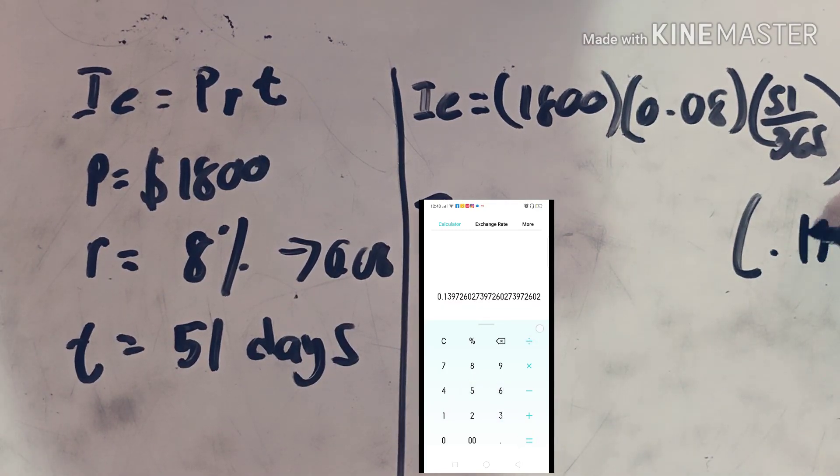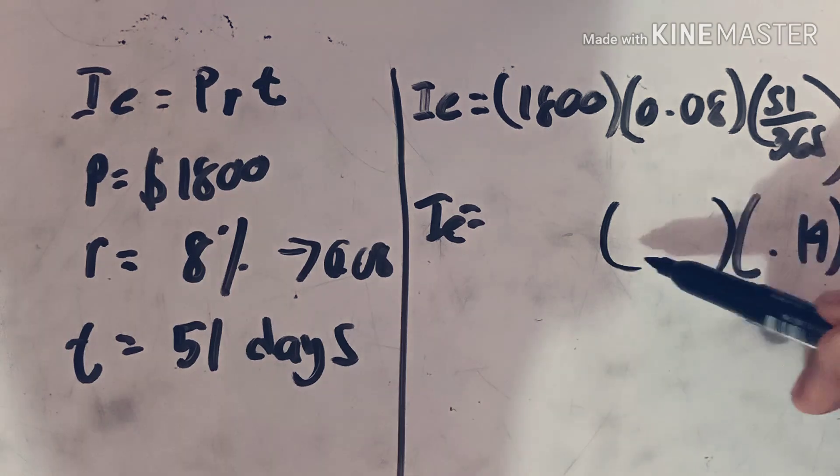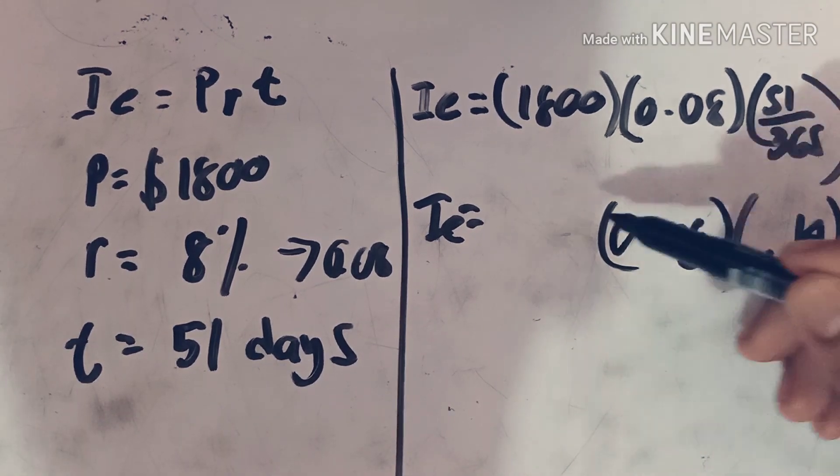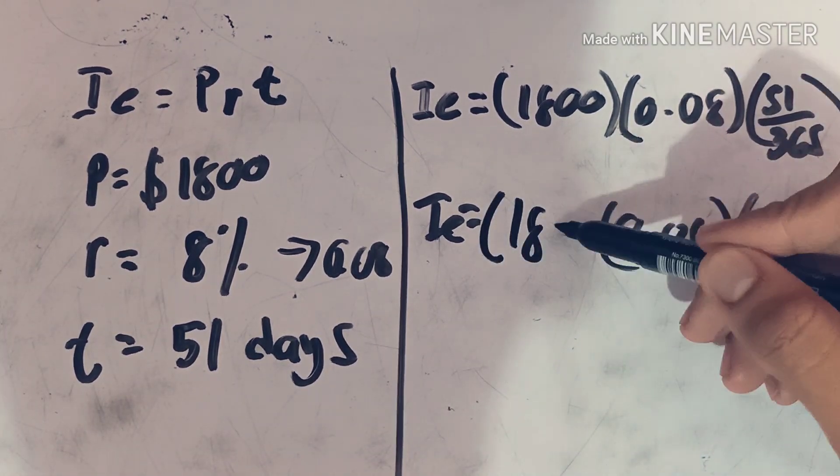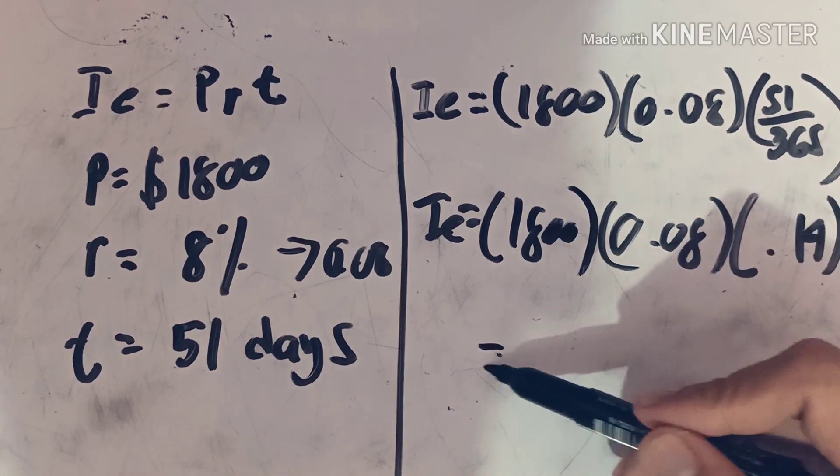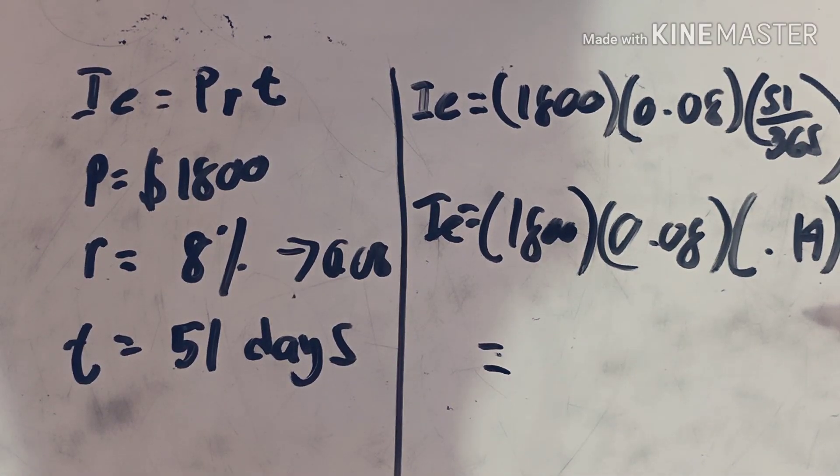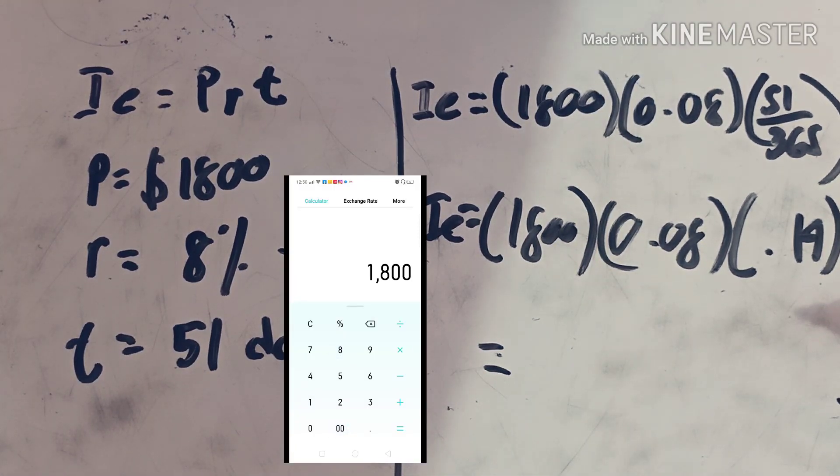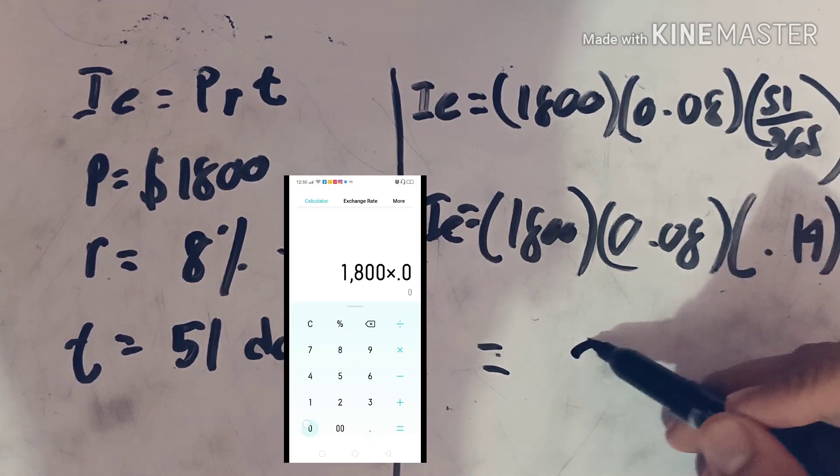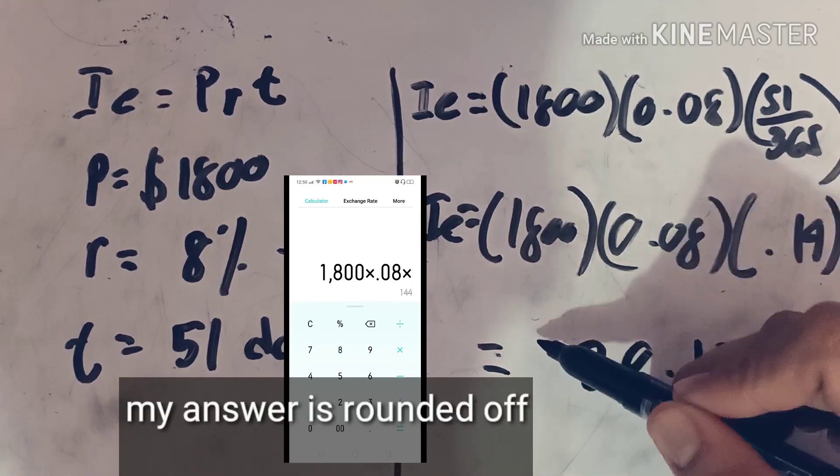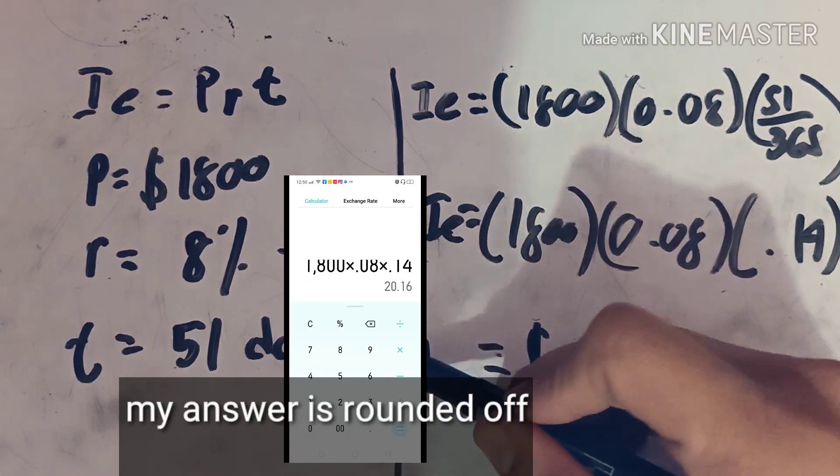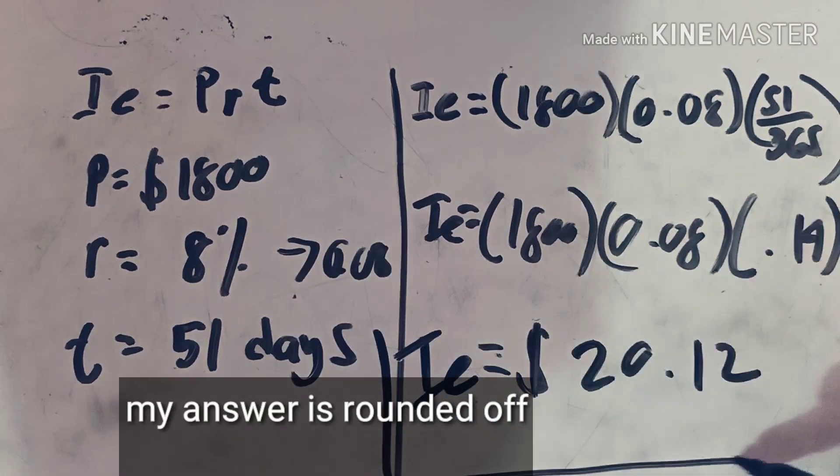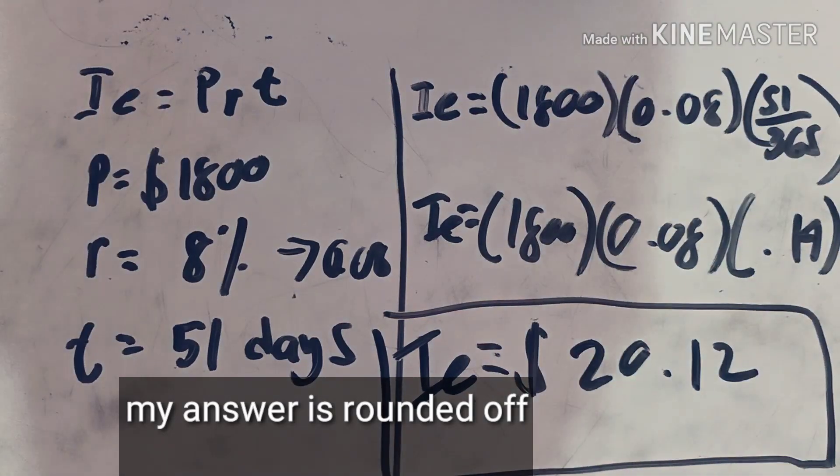Multiply 0.14 by 0.08 and by $1,800. $1,800 times 0.08 times 0.14 equals 20.12. So our exact interest is $20.12.